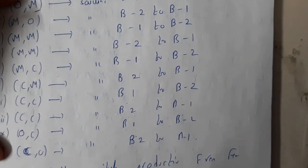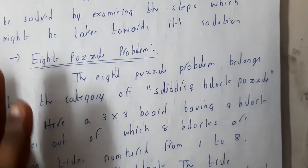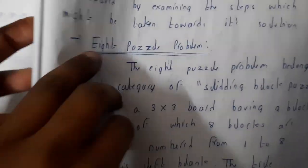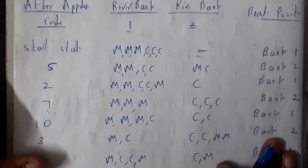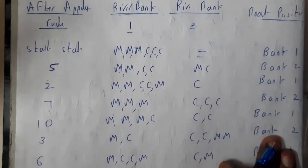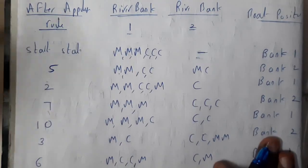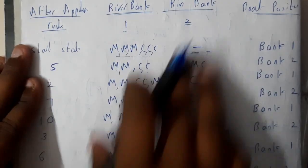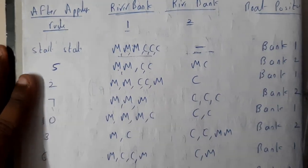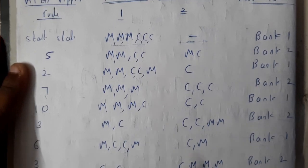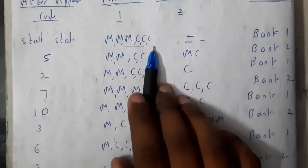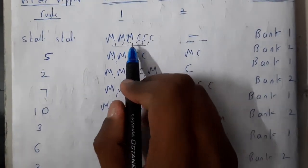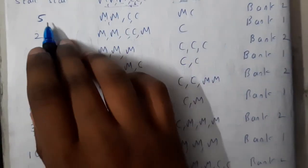Let us continue with the solution. For these kinds of problems there will be many solutions — your friend might do it in around 10 steps but you may take 20 steps; it depends on your thinking skills. This is our start state. I've represented bank one, bank two, and the boat position clearly. Initially at the start it is three missionaries and three cannibals on bank one and nothing on bank two.